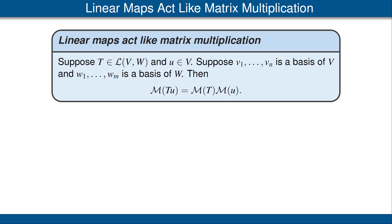Now we come to an important result. This result states that linear maps act like matrix multiplication. Specifically, suppose we have a linear map T from V to W and a vector u in V, with bases v1 up to vn of V and w1 up to wm of W. Then the matrix of the vector Tu in W is equal to the matrix of T times the matrix of u. In other words, T acts just like matrix multiplication under the isomorphisms we have been discussing. In most of these videos we will be focusing on linear maps rather than on matrices, because linear maps give a cleaner way to think about linear algebra. However, it's often useful to keep this theorem in mind, because matrix multiplication is lurking behind the scenes as a possible interpretation.